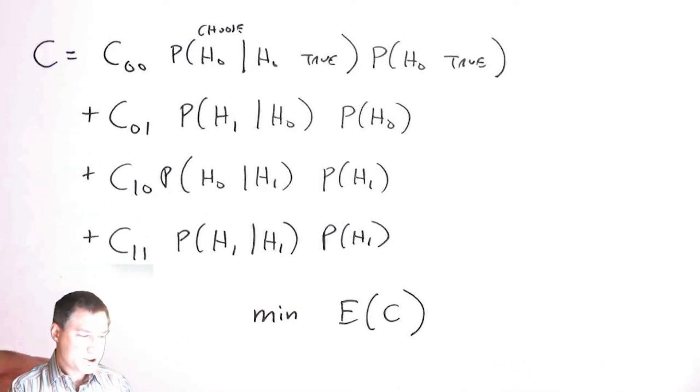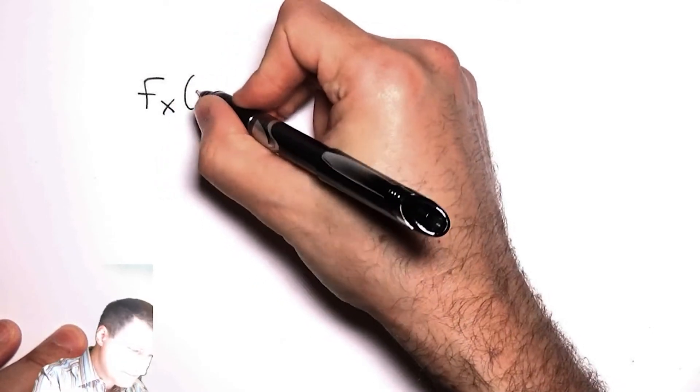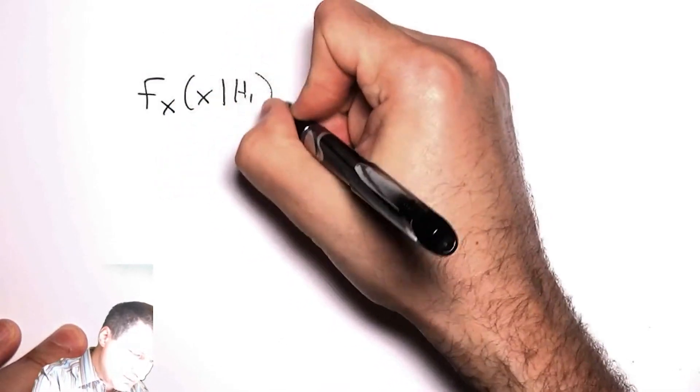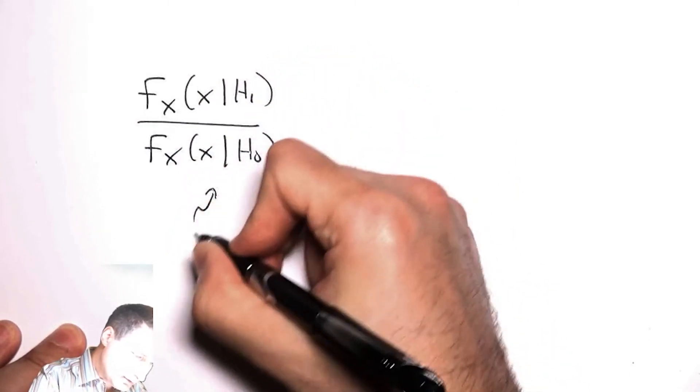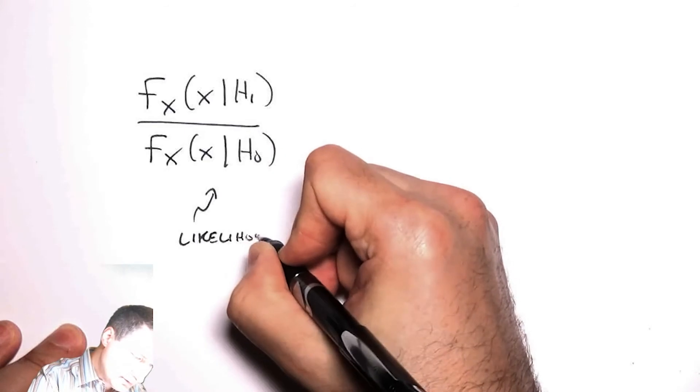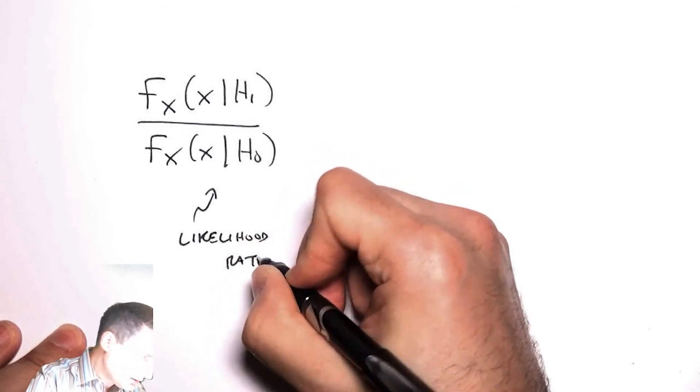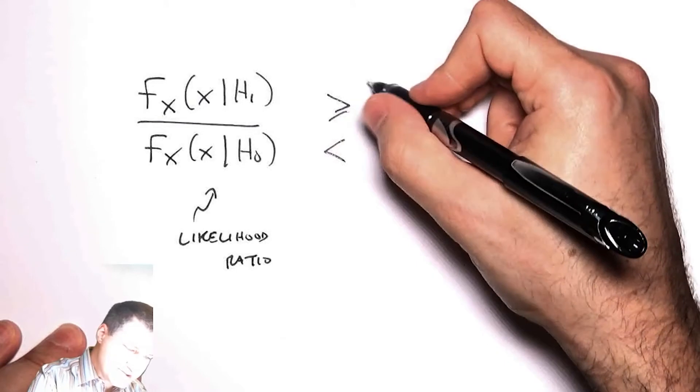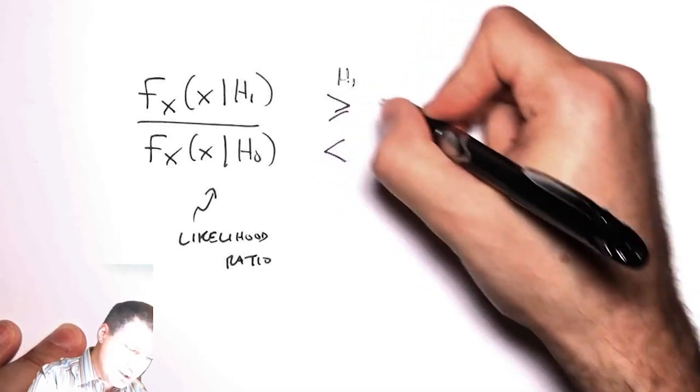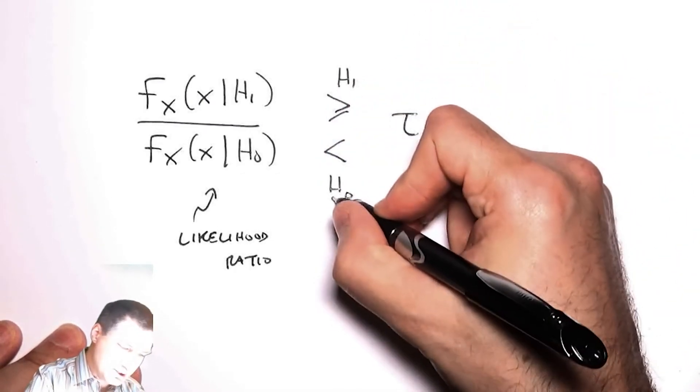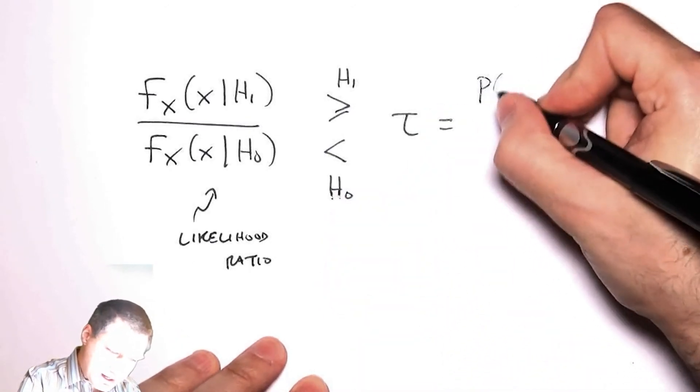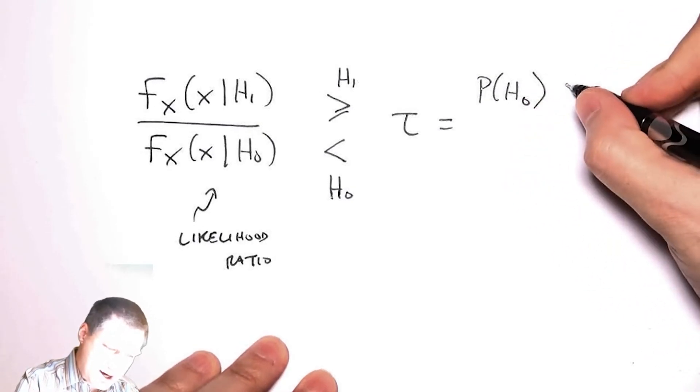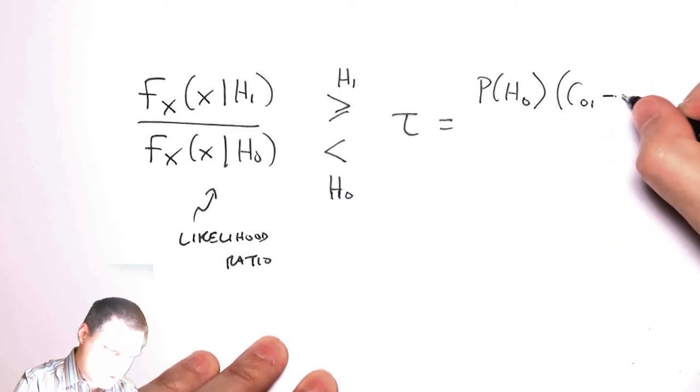And so I'm not going to derive it, but you can show that the decision rule actually comes down to the same likelihood ratio. So this is the same thing that we had before. I'm looking at this ratio, which again I call the likelihood ratio. And the idea here is I have a decision rule that says I'm going to choose H1 if I'm above some threshold and H0 if I'm below that threshold. And this tau is equal to a combination of the prior values and the costs.